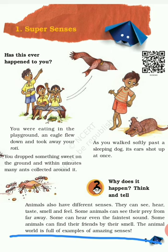Animals can also see, hear, taste, smell, and feel like us. Some animals can see things from far away. Some can hear even the faintest sound — sounds that are not loud, yet the animals can hear them. Some animals can find their friends by their smell. The animal world is full of examples of these amazing senses.